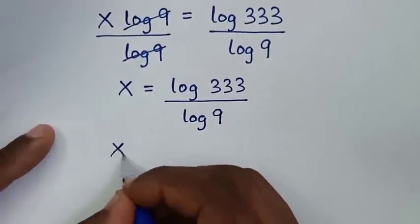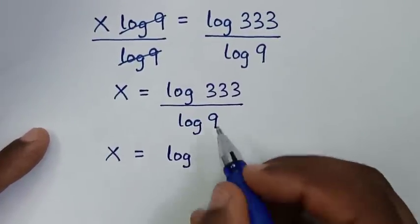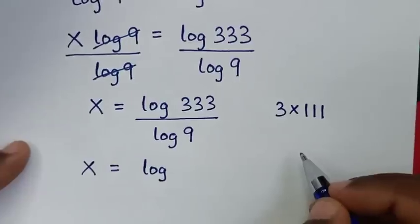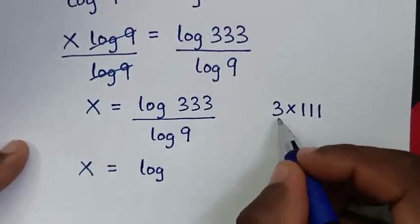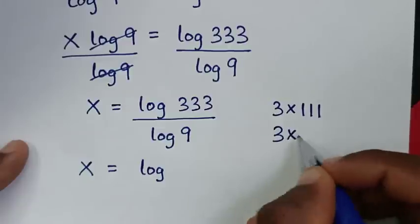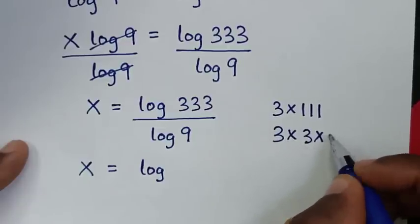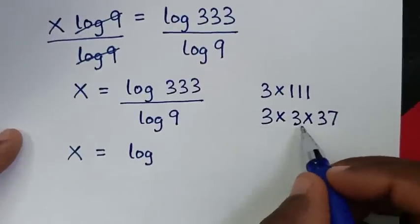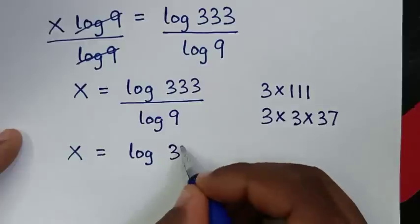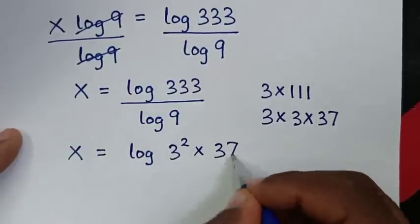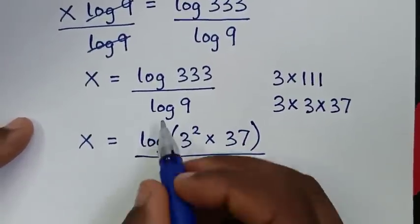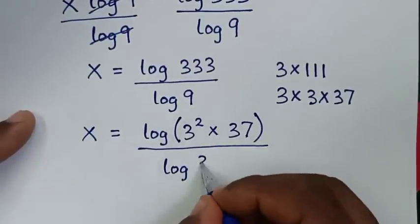Then in the next step, log of 333 can be written as log of 3 squared times 37, since 37 is a prime number. And log of 9 is the same as log of 3 squared.